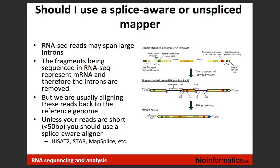When deciding on an aligner, should you use a splice-aware or non-splice-aware mapper? Since we start with DNA, introns get spliced out, leaving mature RNA that is missing those introns — just the exon regions. If you're trying to map mature RNA back to the whole genome, you really need a splice-aware aligner, otherwise it won't work. HiSat 2, STAR, and MapSplice are examples of splice-aware aligners.